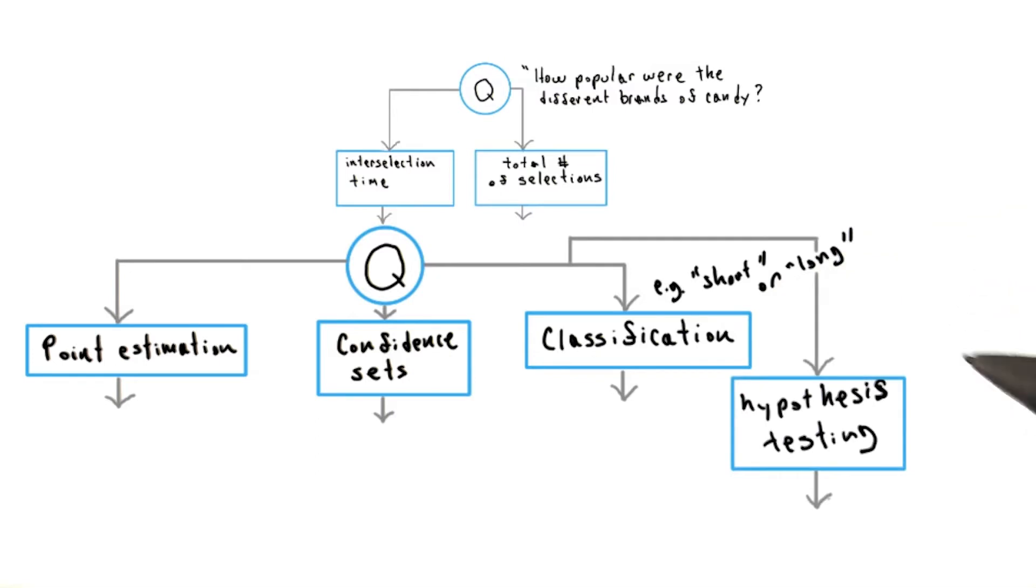Hypothesis testing, in which we, for example, might try to determine if two different collections of interselection time values came from two different probability distributions, and how much confidence we have in that being true. Or lastly, parameter estimation.